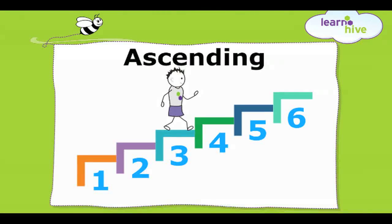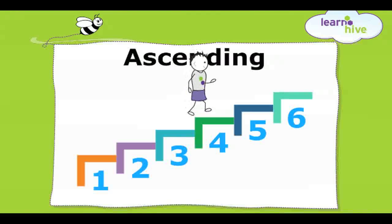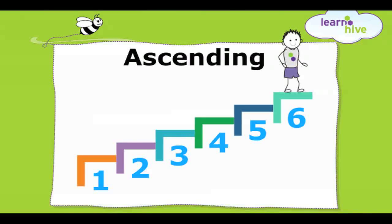Similarly, the numbers one, two, three are said to be in ascending order. Now Dom continues on his journey to climb up to step six. In ascending order, each number is greater than the previous number.